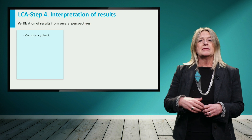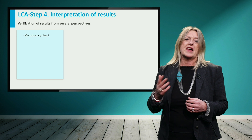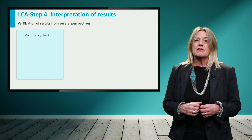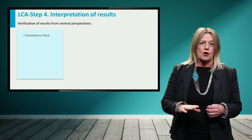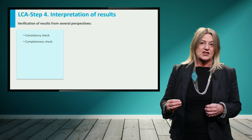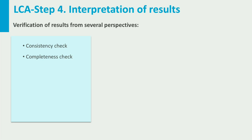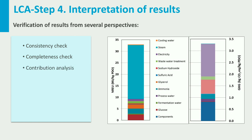The last step of an LCA is the interpretation of results, which can be done from different perspectives. Consistency check refers to confirming that assumptions, methods, models and data are consistent with the goal and scope definition. Completeness check is made to ensure that all relevant information and data needed for interpretation is available and is being used. Contribution analysis allows to identify the flows and processes contributing the most to the environmental impacts. For example, in this case, steam consumption and sugar have the highest contributions to primary energy use, while sugar and electricity consumption are the major contributors to the greenhouse gas emissions.